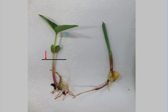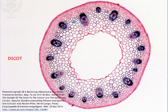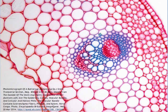A fourth and very significant difference lies in the internal structure of the monocot and dicot. If we were to make a transverse section through a monocot and dicot stem, we would be able to observe characteristic patterns for the arrangement of the vascular bundles. The vascular bundle is a specific portion of the stem that carries the xylem vessels for transporting water and mineral salts, and the phloem vessels for transporting sucrose to all parts of the plant.